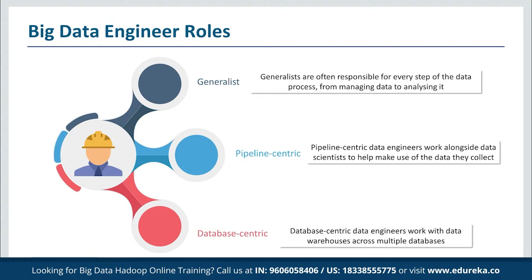Now let's look at the big data engineer's roles. There are typically three kinds of roles that a big data engineer has to assume. First of all, we have the generalist. Generalists are typically found on small teams or in small companies. In this setting, data engineers wear many hats as one of the few data-focused people in a company. Generalists are often responsible for each step of the data process, from managing data to analyzing it.